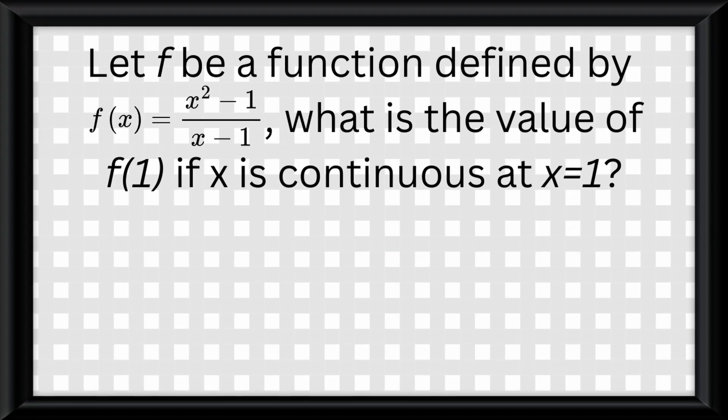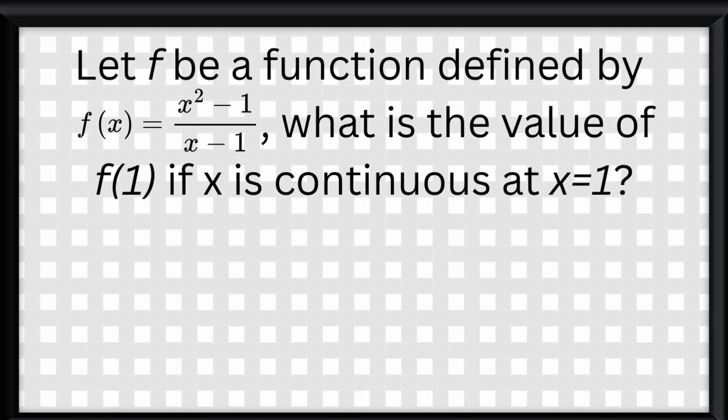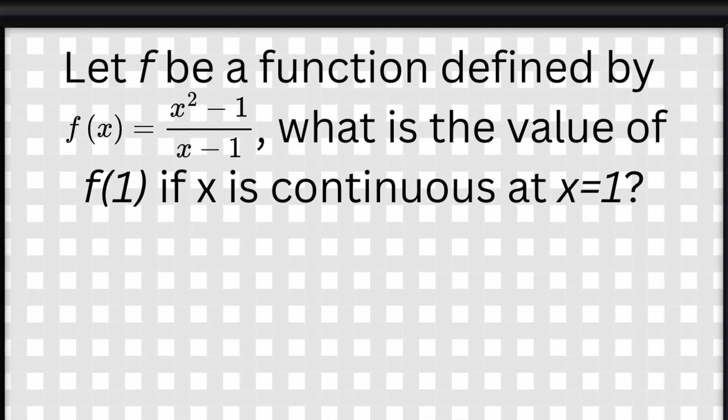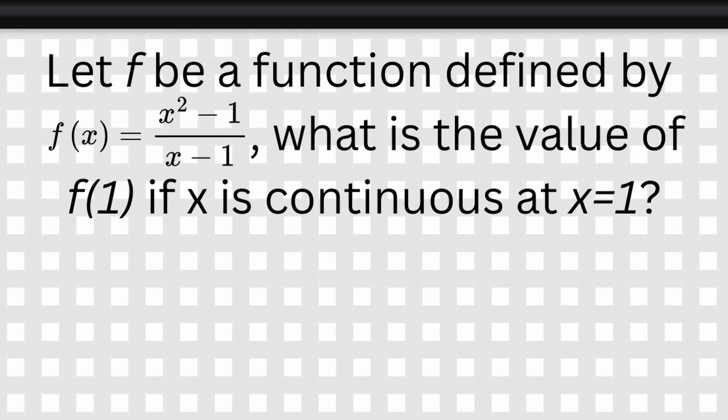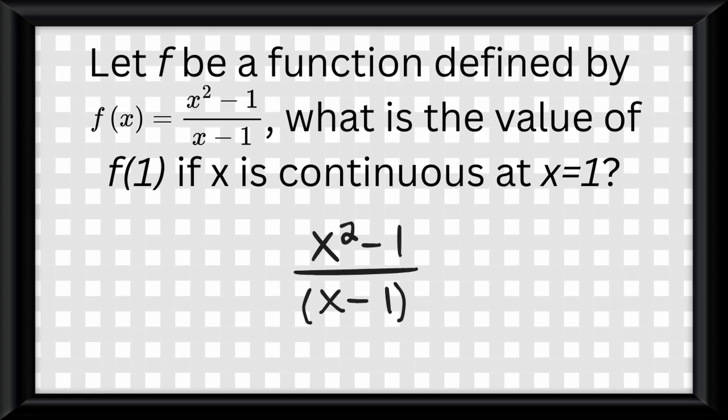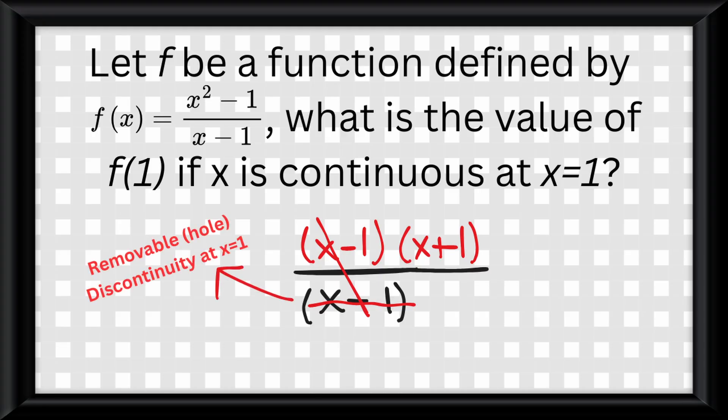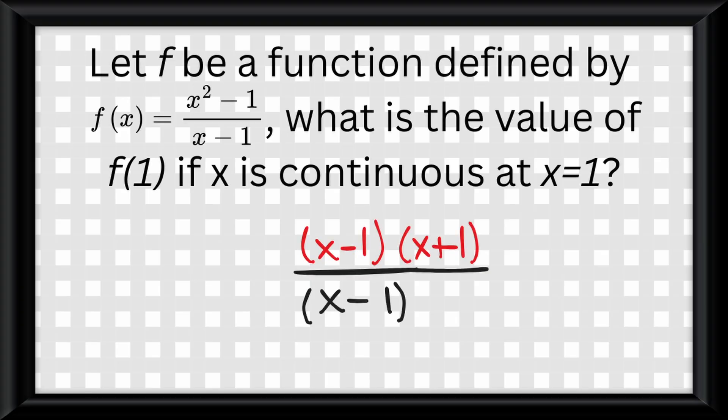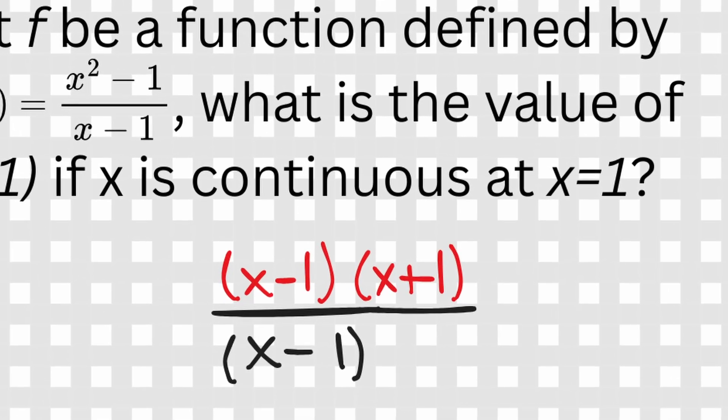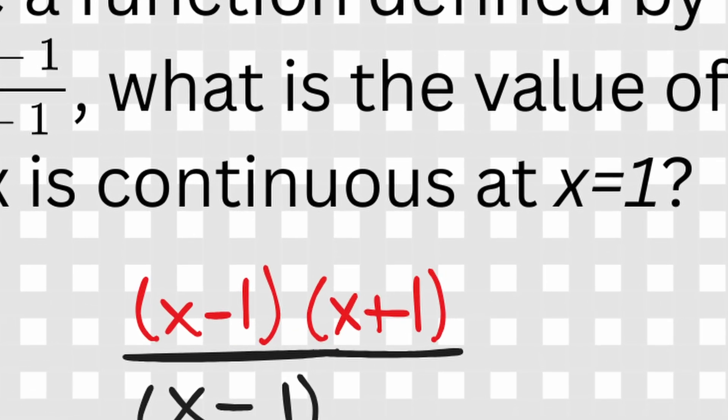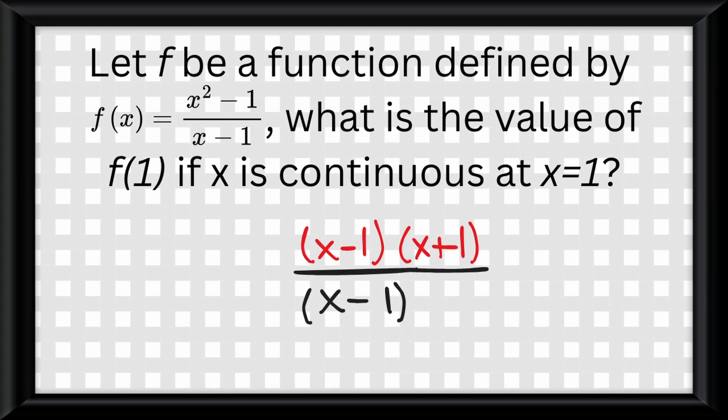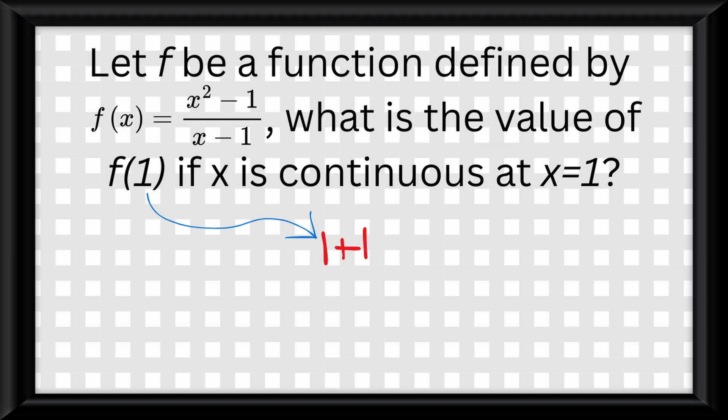Now let's say we have a question like this. Let f be a function defined by f of x equals x squared minus one over x minus one. What is the value of f of one if x is continuous at x equals one? So your immediate thought here is to expand the numerator, cancel out the x minus one, and say there is a hole or removable discontinuity, and be done and say f of one isn't defined. But that is not what the question asked. The question essentially created a separate realm where the function is continuous at x equals one. So let's just algebra this out. We cancel out the x minus ones, then we plug in one for x in the function, and we get two is equal to f of one. And that is our answer.